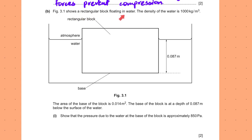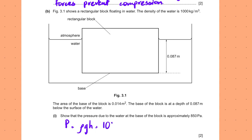Figure 3.1 shows a rectangular block floating in water. Density of water is 1000 kg/m³. The area of the base of the block is 0.014 m² and the base is at a depth of 0.087 m below the surface. Show that the pressure due to the water at the base is approximately the given value. Pressure = ρgh: ρ = 1000, g = 9.8, h = 0.087, which gives approximately 850 Pa.